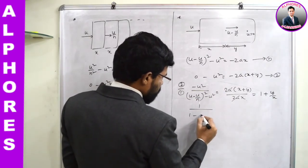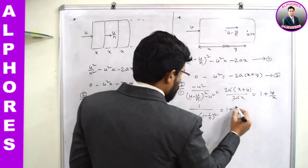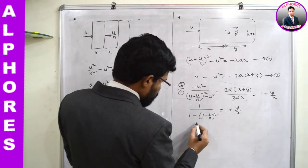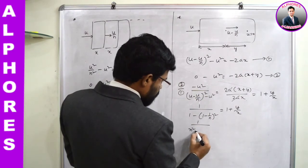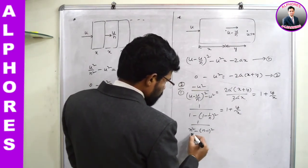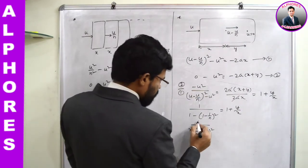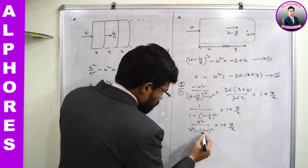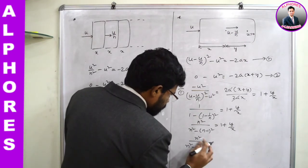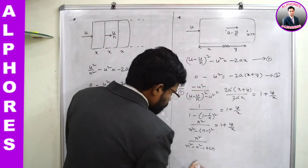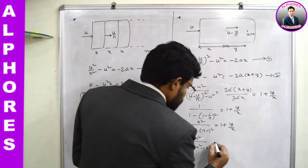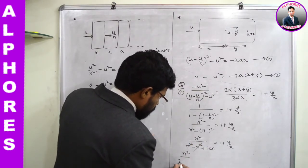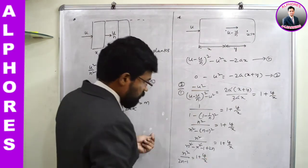Simplifying the left side: taking LCM gives n² / [n² - (n-1)²] = 1 + y/x. Expanding the denominator: n² - (n² - 2n + 1) = 2n - 1. So n² / (2n - 1) = 1 + y/x, and therefore y/x = n²/(2n - 1) - 1.